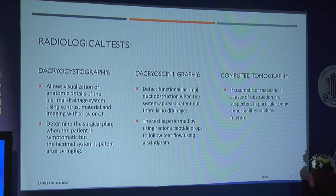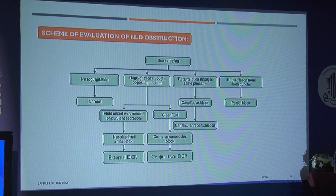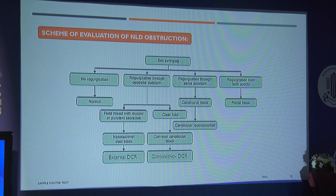Various radiological tests — dacryocystography, dacryoscintigraphy, and CT — come in handy for diagnosis. The overall evaluation scheme: if there is no regurgitation on sac syringing, the patient is normal and other causes of watering must be ruled out. If there is regurgitation through the opposite punctum with clear fluid, it is a common canalicular block requiring conjunctival DCR. If mucopurulent, external DCR is the option. If regurgitation comes through the same punctum, the block is at the canaliculus level, requiring canalicular reconstruction. There are also cases with partial block.